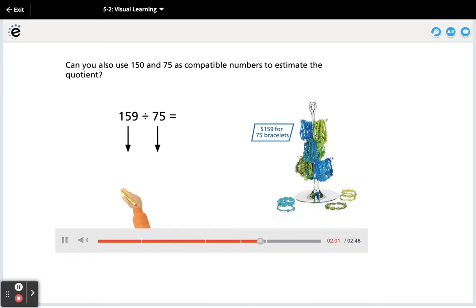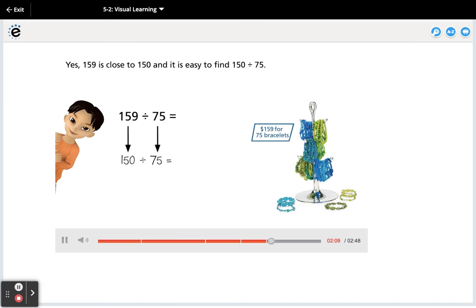Can you also use 150 and 75 as compatible numbers to estimate the quotient? Yes. 159 is close to 150 and it is easy to find 150 divided by 75. There's often more than one choice of compatible numbers that could be used to find an estimate.